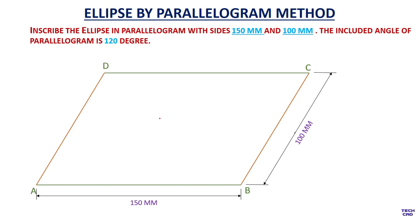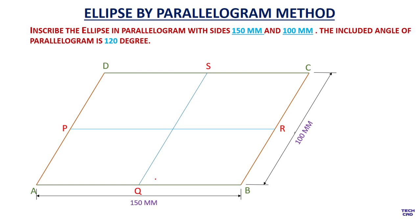Divide your parallelogram into some equal parts. Take a midpoint of AD and a midpoint of BC and make a line PR. In the same way, take a midpoint of AB and CD and make a QS line, and give this point the name O.